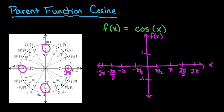So what we're going to do is use the unit circle to help us with our points for cosine for the parent function. So we're going to start at 0 and then we go to pi over 2, pi, 3 pi over 2, back to 2 pi.